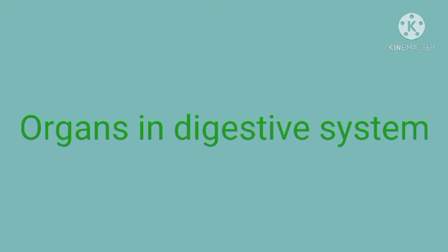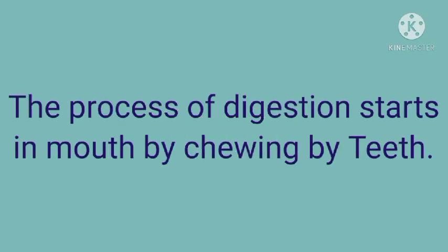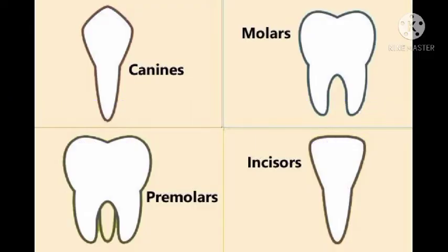Teeth are also an important part of our digestive system. The process of digestion starts in our mouth by chewing with the teeth. There are four types of teeth in our mouth: canines, molars, incisors, and premolars. Each type of teeth has different functions - tearing, chewing, biting, and breaking. There are 32 teeth in our mouth.